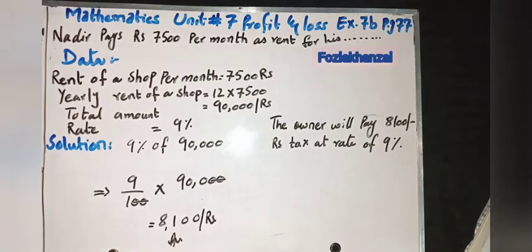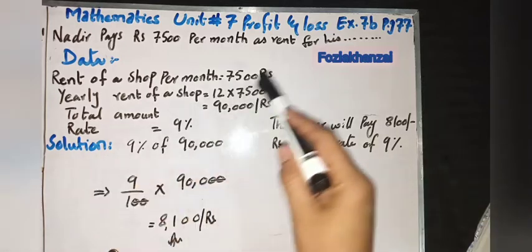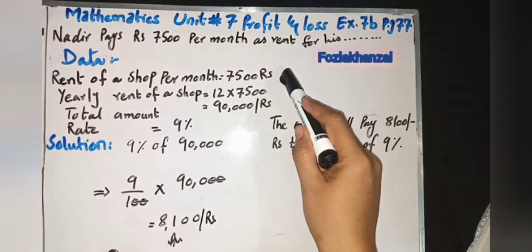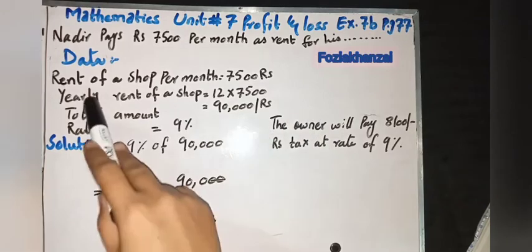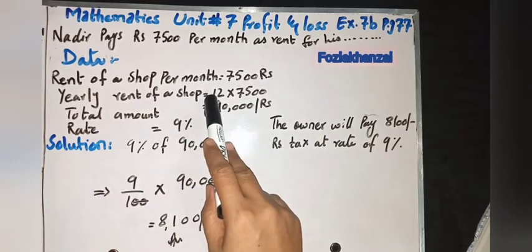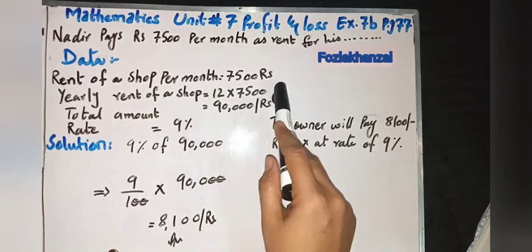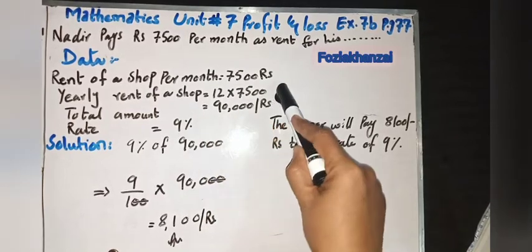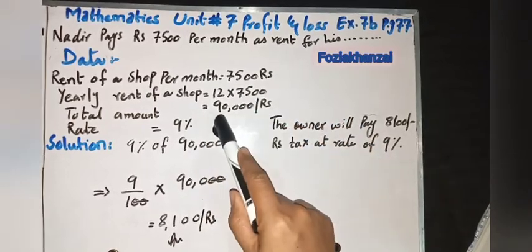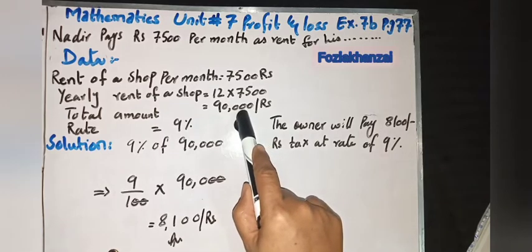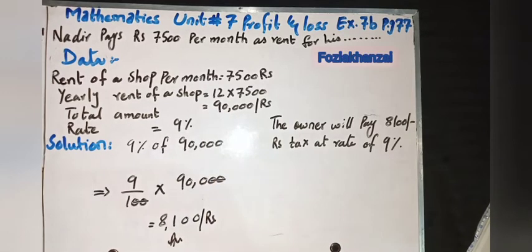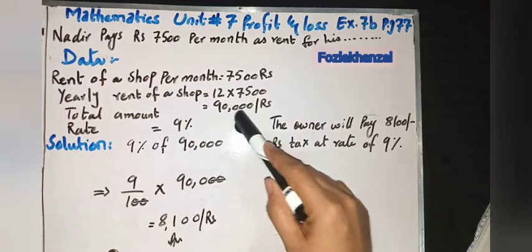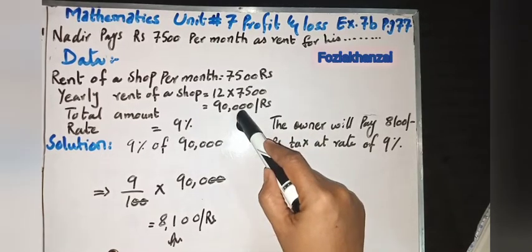According to the data, rent of a shop per month is given as 7,500 rupees. We pay the tax yearly, that's why we multiply by 12. One year is equal to 12 months, so 12 multiply by 7,500 rupees equals 90,000 rupees. This is the total rent for 12 months. The total rent for the whole year is 90,000 rupees.